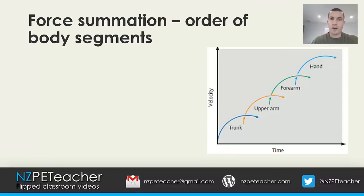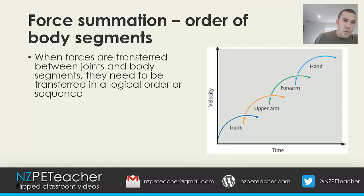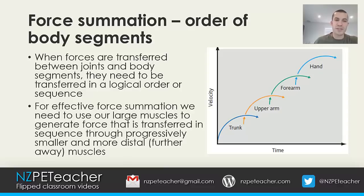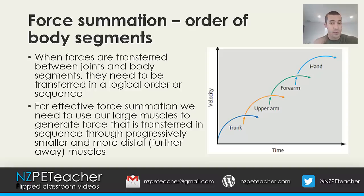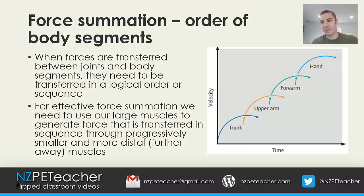Order of body segments — the second factor. When forces are transferred between joints and body segments, they need to be transferred in a logical order or sequence. For effective force summation, we use large muscles to generate force, which is then transferred in sequence through progressively smaller and more distal — meaning further away — muscles in the body. The picture on the right shows the order of body segments in the upper body during a netball shot. Forces are generated from larger muscles beginning at the trunk and are transferred progressively to smaller body segments, finishing at the hand — giving us the most potential for force development.